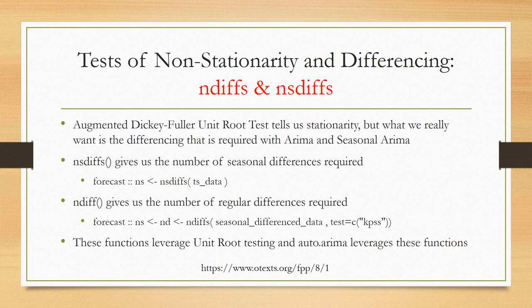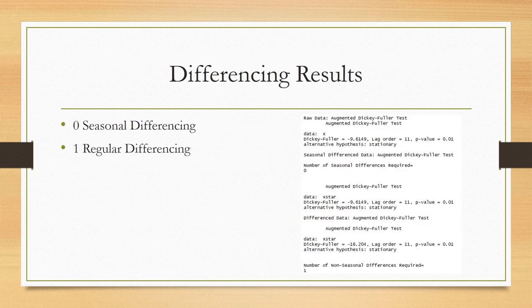To determine the required differencing, we use the nsdiffs function and the ndiffs function in R. The nsdiffs function gives the number of seasonal differences required to treat the data, and the ndiffs function gives the number of regular differences required. Both functions are also leveraged internally by the auto.arima function. Combining the results of the ADF test and these functions, the statistical output suggests zero seasonal differencing and one level of regular differencing are needed. This gives us a good starting point for our analysis, though it doesn't necessarily coincide entirely with our visual interpretation.